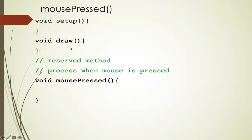The mousePressed method is a reserved method used to process any mouse input. So as we are drawing our animation in the draw method, if a mouse is pressed, it will stop the animation, jump down to mousePressed, process the code that we write, and then jump back and resume the animation.